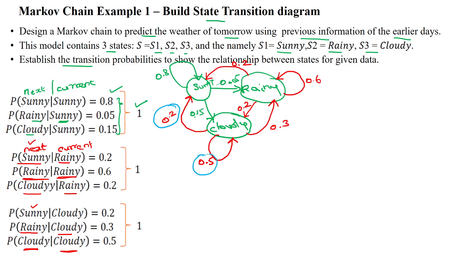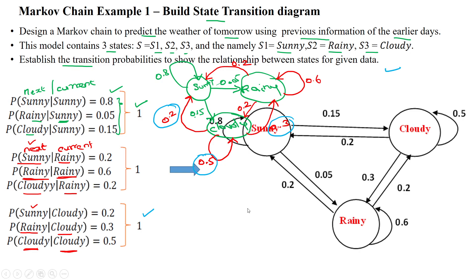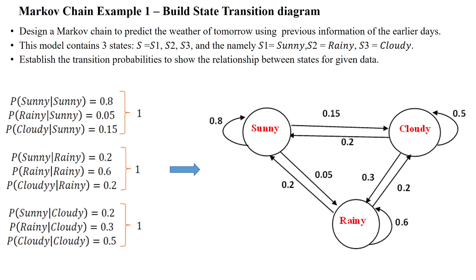The probability of cloudy given cloudy — today is cloudy and tomorrow is also cloudy — is 0.5. So the outgoing edges from cloudy are 0.2, 0.3, and 0.5, and their sum equals 1. This is the state transition diagram based upon the collected values.